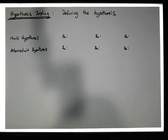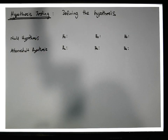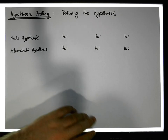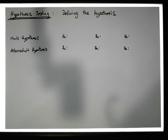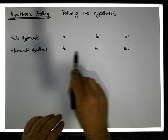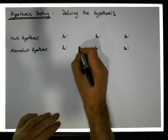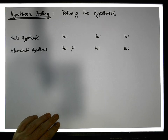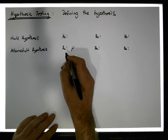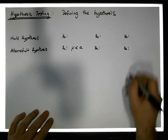This is a single sample test. We want to test whether there's evidence to suggest that a single sample selected from a population indicates the population value takes on a specific value, is less than that value, or is greater than that value. The alternative hypothesis is always the question we're looking to see whether there's evidence to support. There's a statement about the population parameter — the population average.